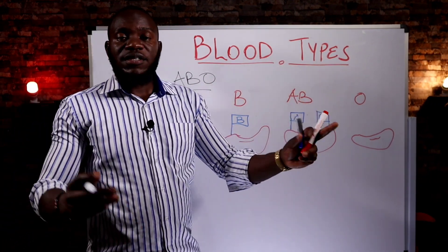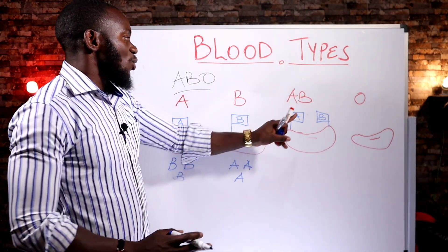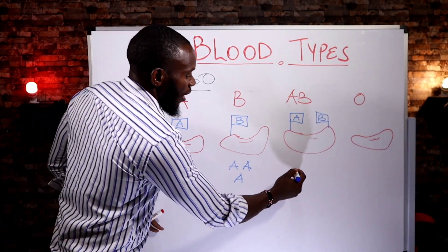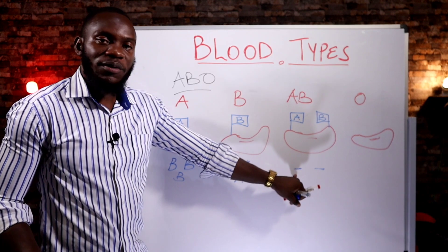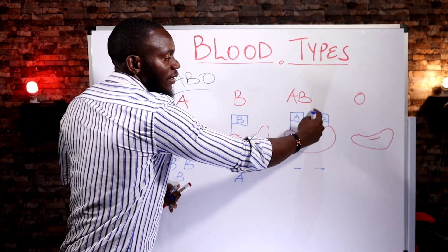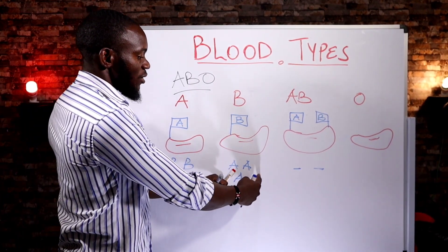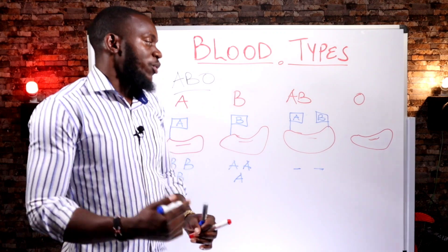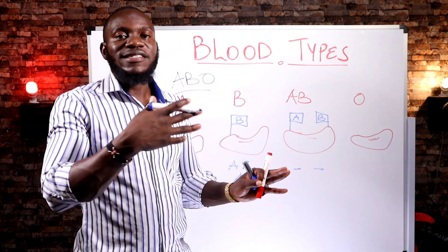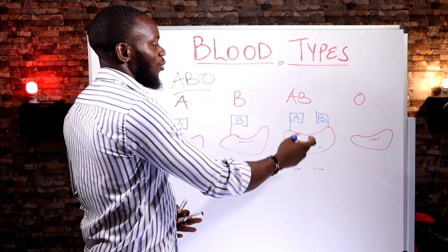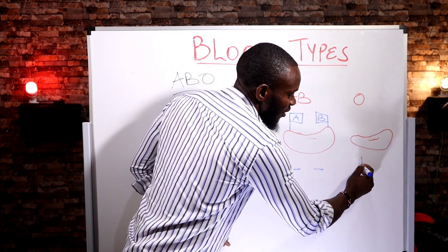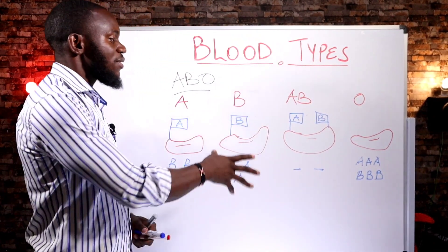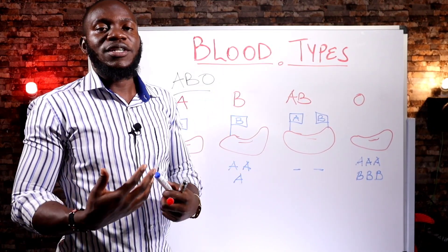AB has A and B on the surface. Since it has both A and B on the surface, it will not have any antibodies — it cannot form any antibodies. Why? Because if it forms antibodies against B or against A, it will be killing itself, since it has all A and B antigens on the surface. Now, blood group O has no flag, so it doesn't identify as A or B, meaning it can form an army that can fight both A and B. So O has anti-A antibodies to kill A, and anti-B antibodies to kill B. So this is the basis of who will donate blood to who.